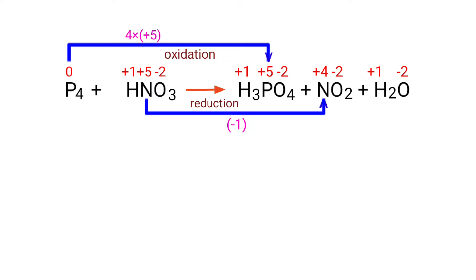Now you can make the increased oxidation number equivalent to the decreased oxidation number. To do this, you can multiply the decreased oxidation number by a coefficient of 20. Now you can write the equation as P4 plus 20 HNO3 gives H3PO4 plus NO2 plus H2O.